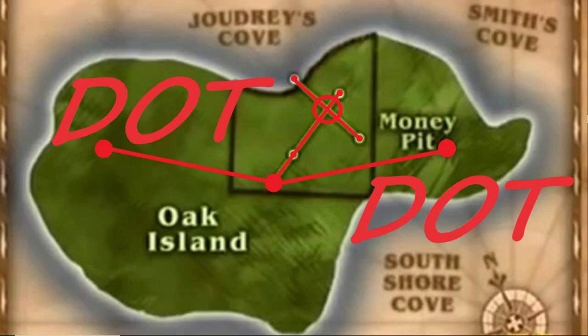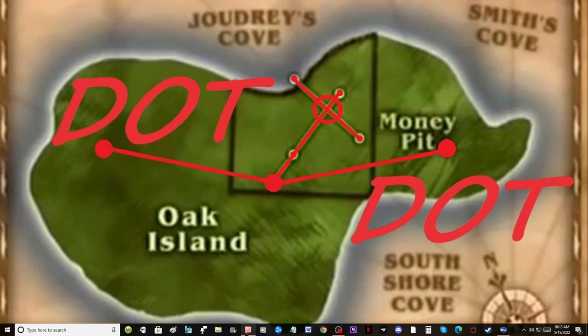Hello everybody, and welcome to Dot2Dot. Today we're going to talk about what the 90-foot stone reveals. We're going to look at the words that were transcribed or translated through the cipher of the 90-foot stone. We're going to look at the etymology of those, and then go on to possibly looking at what happened during that time period and who may be responsible for the legend of Oak Island. Here's my presentation — we'll get started.